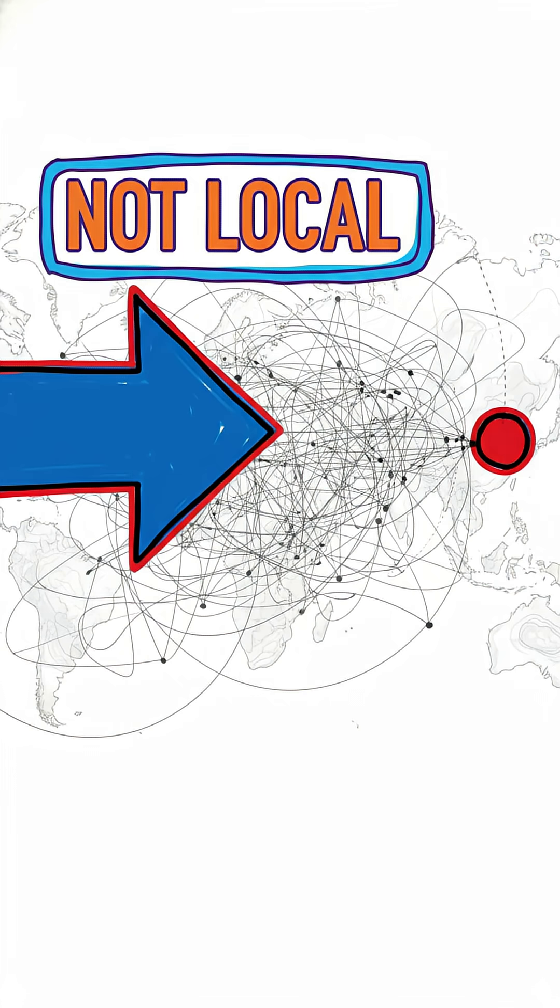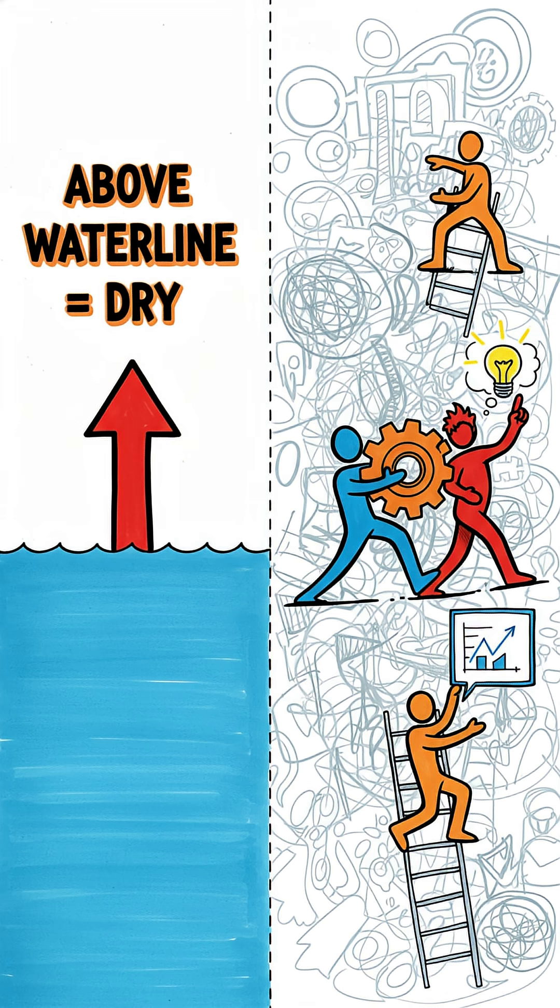And second, the reason why that water gets trapped is because draining is what's known as a non-local phenomenon. With evaporation, a spot is dry if it's above the waterline. Simple.